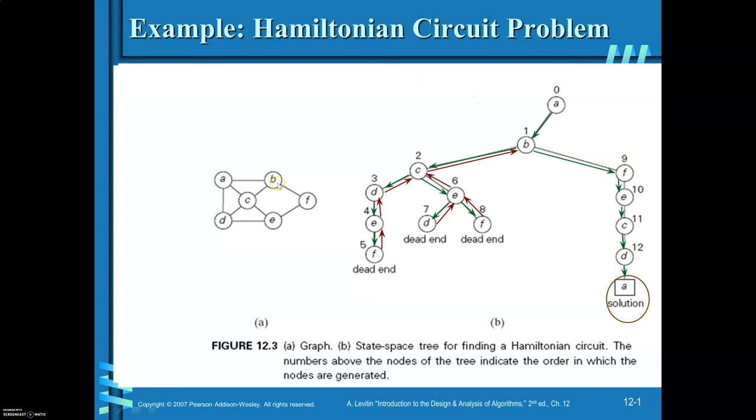B to F, then E, C, D, A. With that, look at here, you are getting the solution. You have visited through all the vertices exactly once and you are able to come back to A. So this is a Hamiltonian circuit. When you complete this state space tree, you will get five more solutions. Try by yourself.